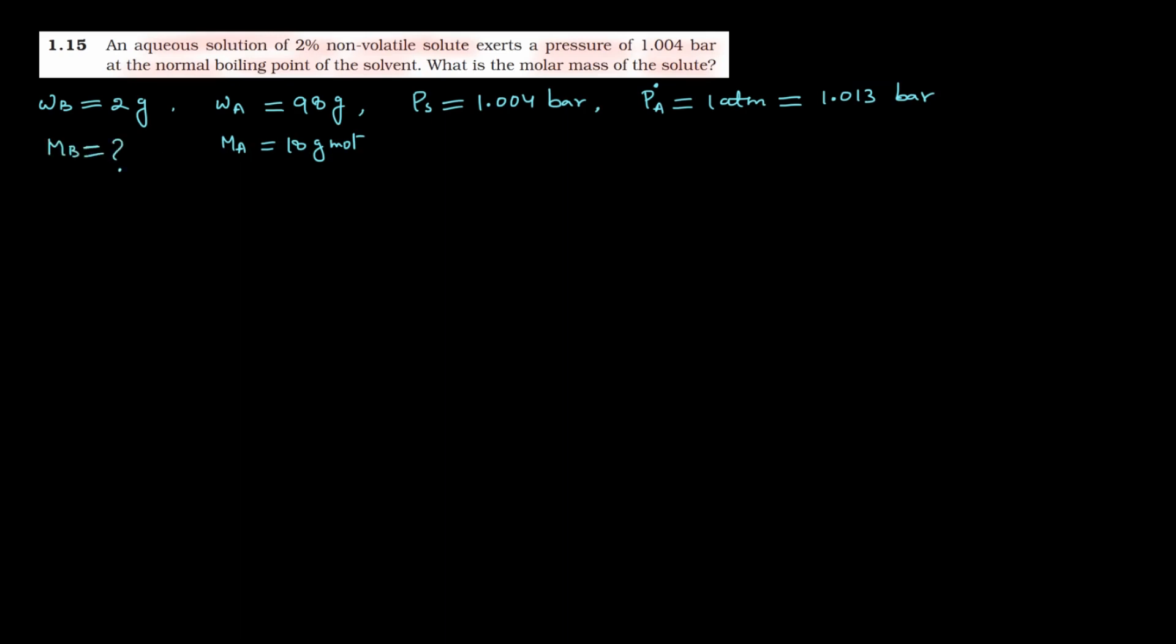How will we do it? We will use relative lowering of vapor pressure here. The formula for relative lowering in vapor pressure is: (p₀ - ps)/p₀ equals mole fraction of the solute. And the mole fraction formula is nb/(nₐ + nb).